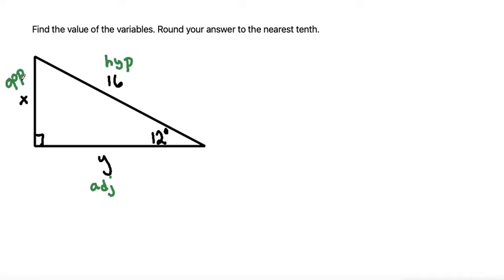we want to use a trig ratio that has one of our variables and one number for our side lengths and not both side lengths being variables. So the ratio of opposite over hypotenuse is the sine. So we can use that the sine of the angle is equal to opposite over hypotenuse.